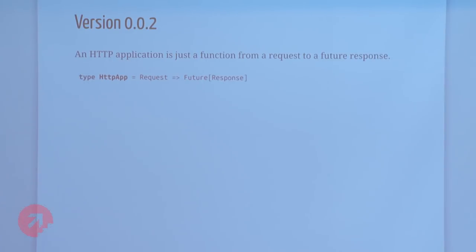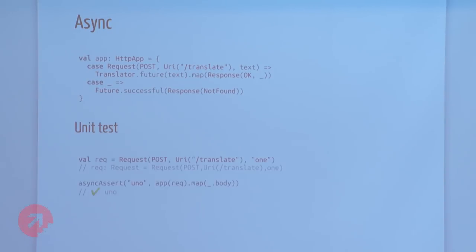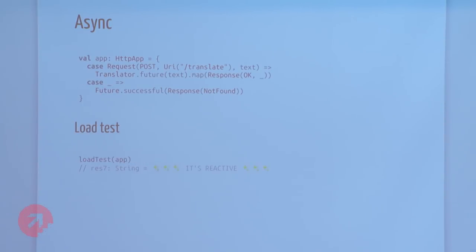A lot of our backends operate in the context of a Future, so why don't we operate in the context of a Future? Now we can see when we call the Future, all we do is wait for that response to come back — we don't need to block a thread. We map it to an HTTP response. Our unit test has changed a little bit — instead of just an assert, we need to do an async assert, but Scala Test, Specs2, and MiniTest are all good at asynchronous assertions. I think this is certifiably a reactive HTTP library at this point.